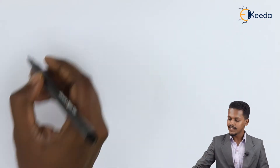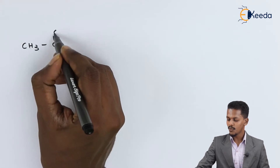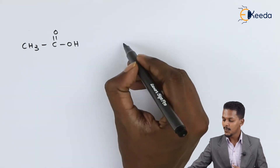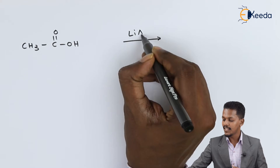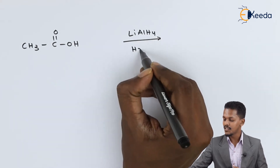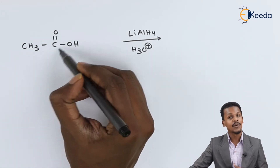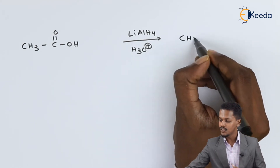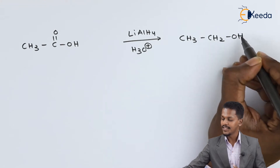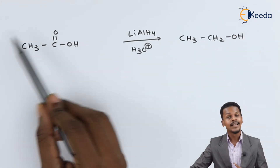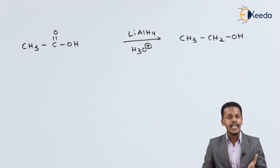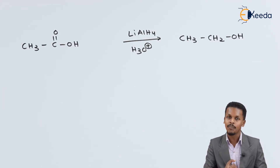For example, if we consider acetic acid (ethanoic acid), that is CH3-C(=O)-OH, and treat it with lithium aluminum hydride in an acidic condition (H3O+), the carbonyl group of the carboxylic group will be converted into a CH2 group, giving CH3CH2OH. So we have converted ethanoic acid into ethanol. This is the reaction of carboxylic acid with lithium aluminum hydride to obtain primary alcohol.